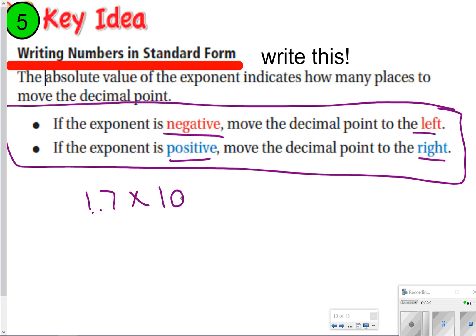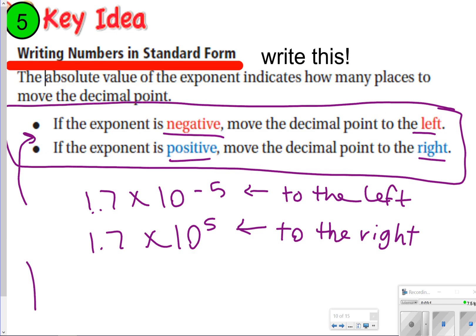So for instance, 1.7 times 10 to the negative 5th. This will be moving decimal to the left. Or if we have 1.7 times 10 to the positive 5th, that's going to be moving the decimal to the right. Go ahead and take time now to write down what's in the box here. And once you're done, click play so you can see how it's done.